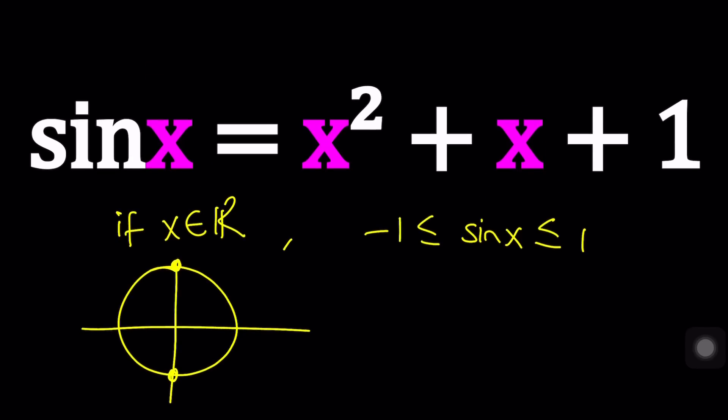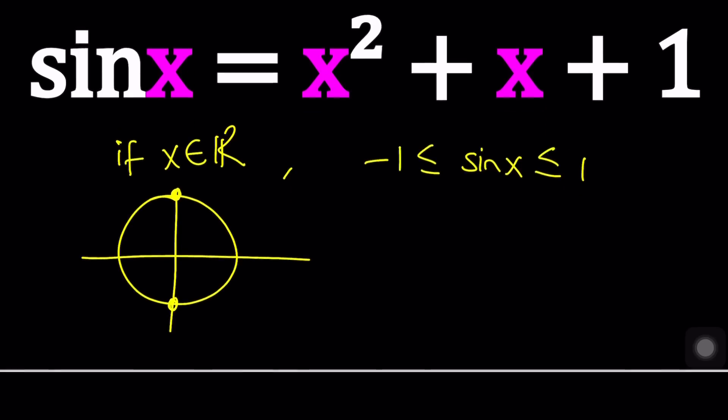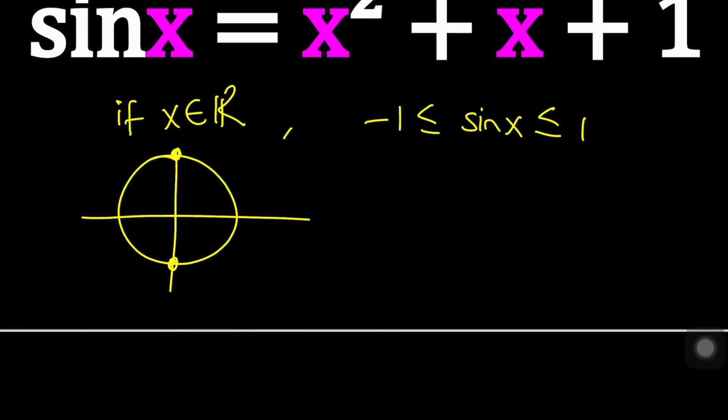But what does that have to do with the solution? I told you we're going to use an interesting approach. First, I want you to notice that sine x is between those values for real x's. What about the other one? Well, the graph of x squared plus x plus one is a parabola. So if you think about it as a function f of x equals x squared plus x plus one, the graph is a parabola, which means it's either going to open up or down. In this case, it does open up because of the value of a, which is positive.